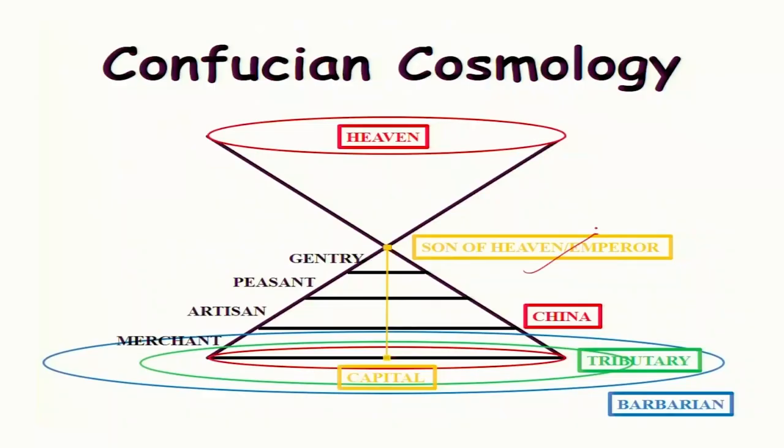There is an intermediary between heaven and earth — that is the state. The son of heaven or emperor, and in today's times you can call it the state, is the intermediary. The state has to represent heaven on earth, and therefore people have to be obedient to the state. Just as people are obedient to heaven — because if they are not, heaven will punish them through natural calamities, problems, and enemies — similarly, because the state represents heaven, people have to be obedient to the state and if they go against it, they will be punished.